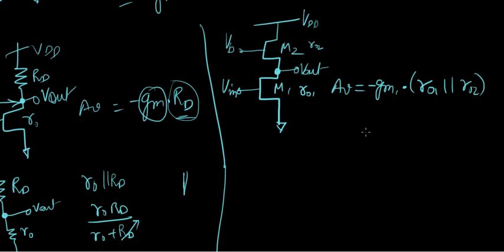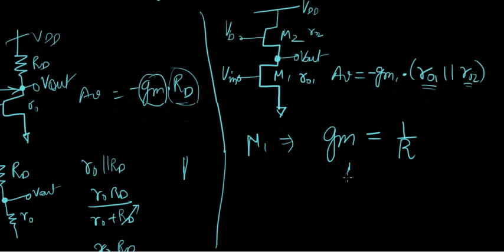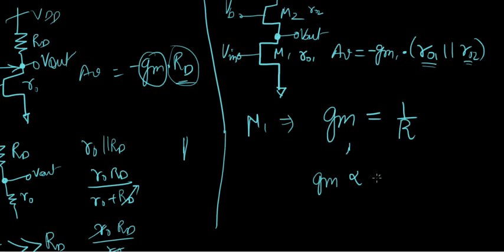Now, again, as we're really greedy about getting high gains, we're going to be looking at how we can increase R01 and R02. So, just consider M1 here. What should I do to increase its resistance? We know that gm is equal to 1 over R, the resistance that a transistor can provide. But gm is proportional to w over L. And if you talk about the first transistor, w over L1.